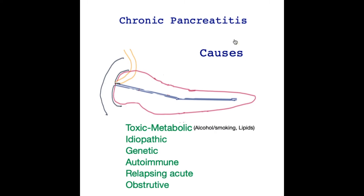The main causes of chronic pancreatitis are represented by the mnemonic TIGARO. T stands for toxic or metabolic, the commonest of which is alcohol, responsible for around 50% of cases. Association with smoking increases the risk of developing chronic pancreatitis. High levels of lipids in the blood, such as in diabetes, will also trigger chronic pancreatitis in the long term.